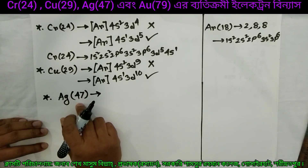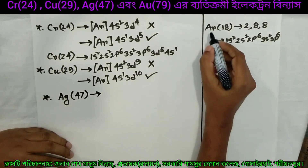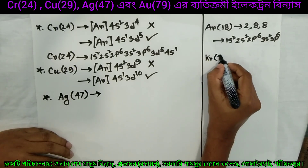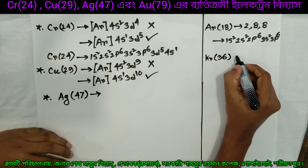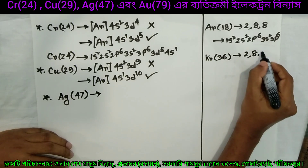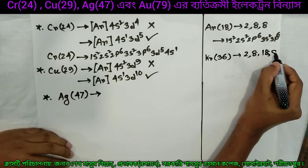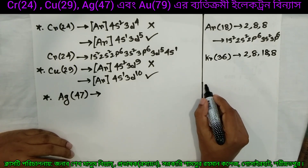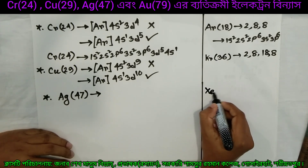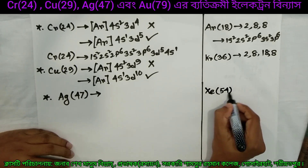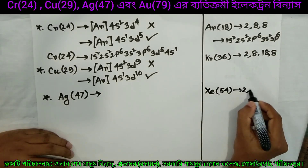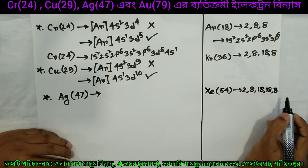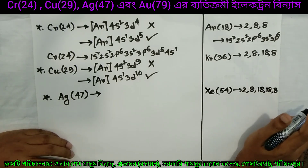Now we have to use the noble gas notation. This is Krypton — Krypton is 36, with electron distribution 2, 8, 8, 8. And this is Xenon — atomic number 54, with distribution 2, 8, 8, 8, 8, 8.